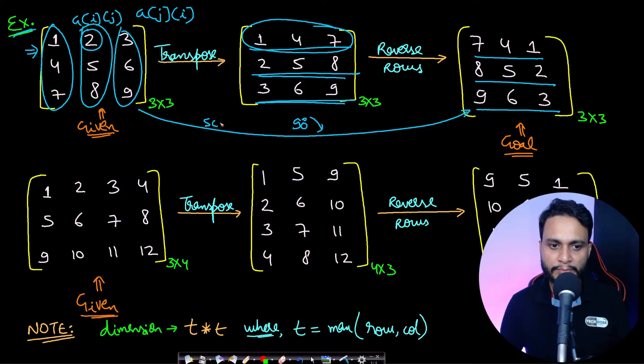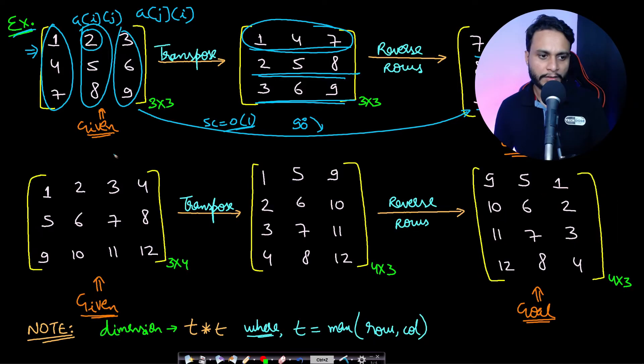Now in this case the space complexity is order of one because this is an in-place algorithm. Now if we consider a rectangular matrix instead of a square matrix, the technique will be the same, but then you have to take extra care while solving for rectangular matrix. Let's see: if you have a 3 by 4 matrix, then if you transpose it, it becomes a 4 by 3 matrix. That is, if you transpose an M by N matrix, then this becomes an N by M matrix. You have to be careful about this.